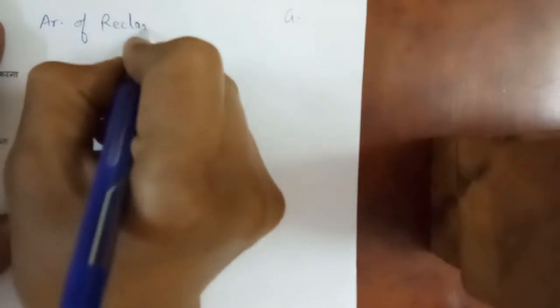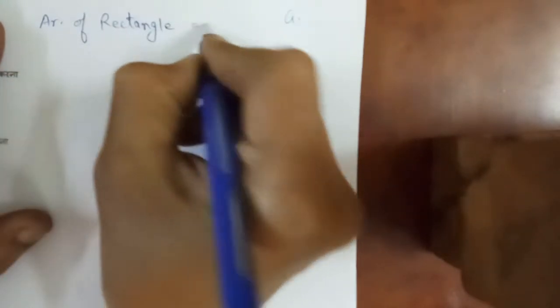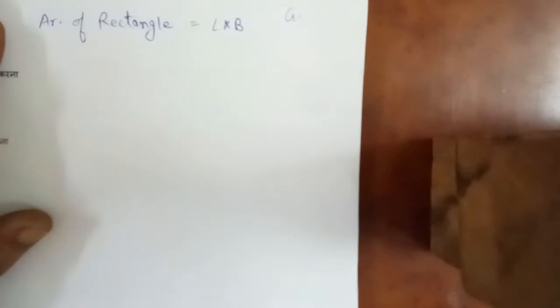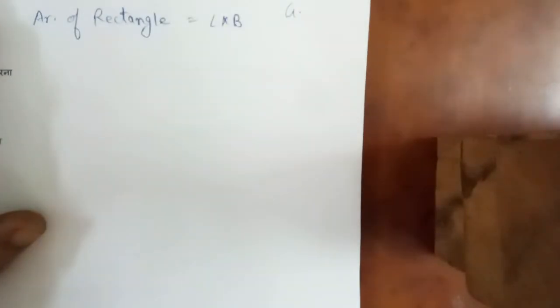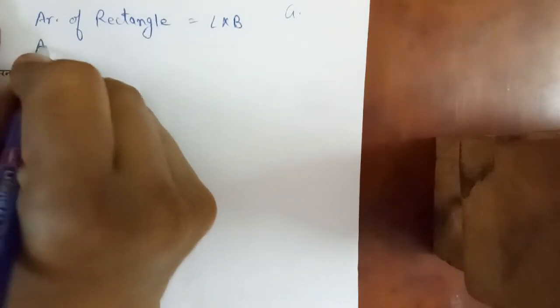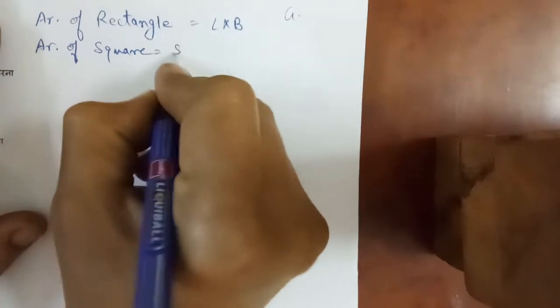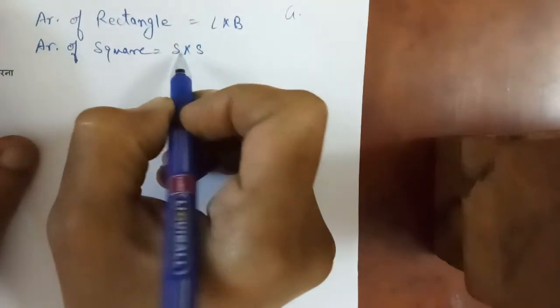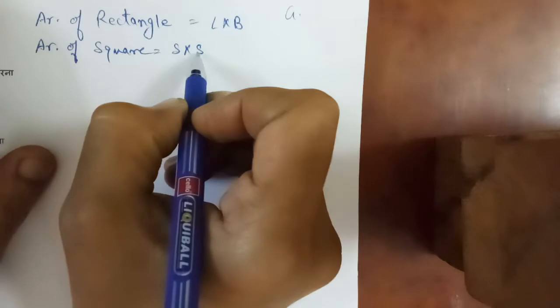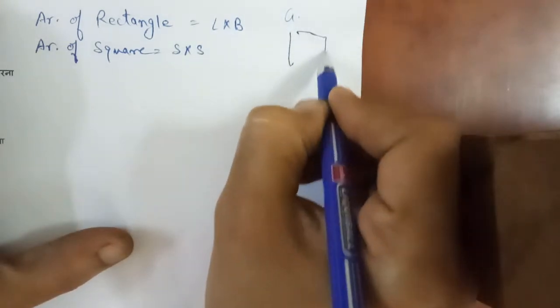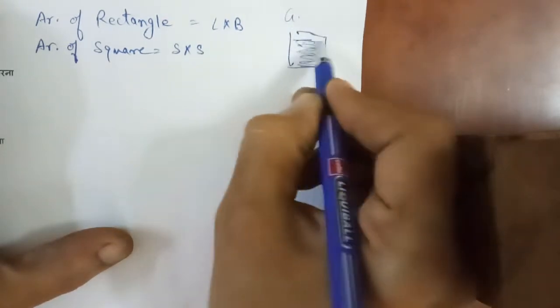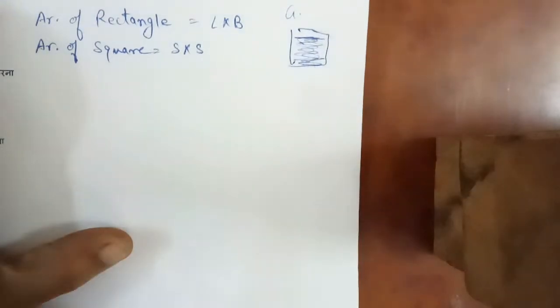Here we have to look at the area of rectangle. Area of rectangle का formula है — length into breadth. Next is area of square. Area of square का formula है — side into side. Square की सारी sides equal होती हैं, so side into side gives the area. The internal part of the figure is called the area, or the shaded part of the figure is called the area.